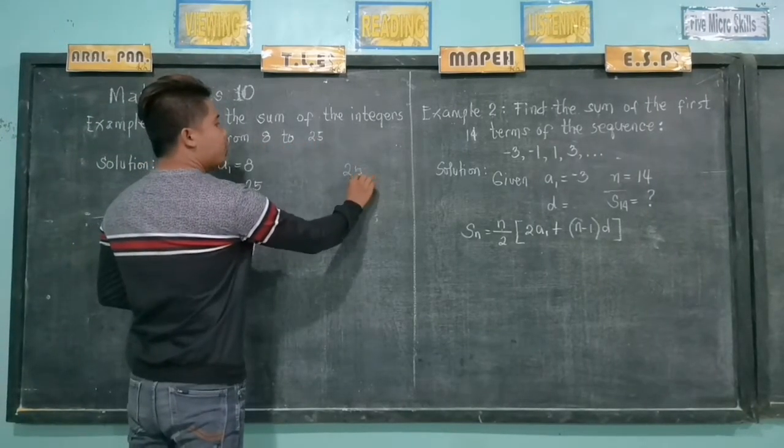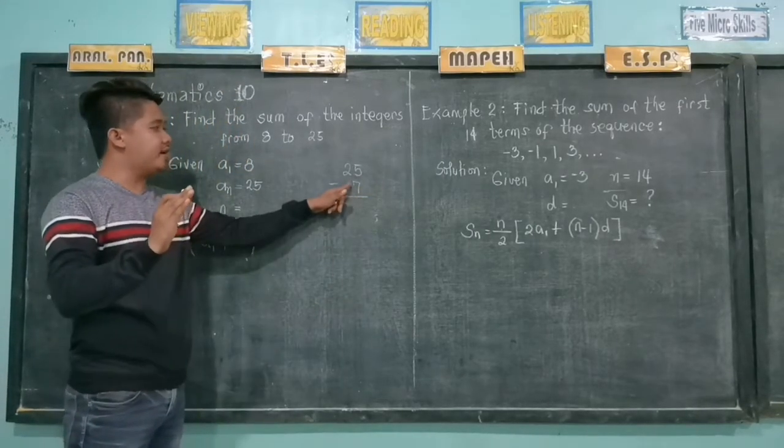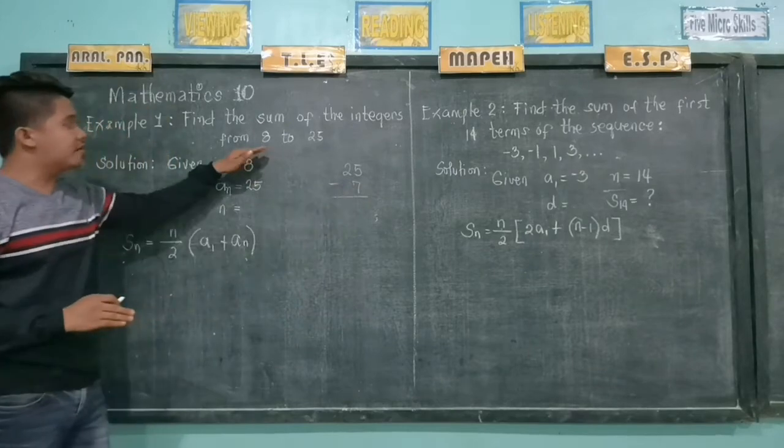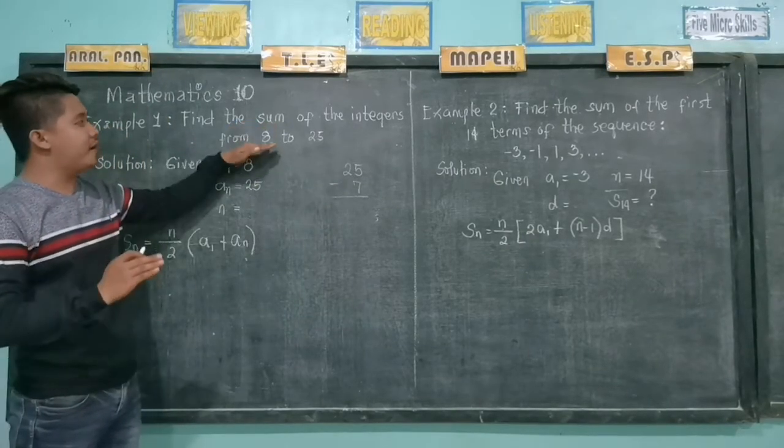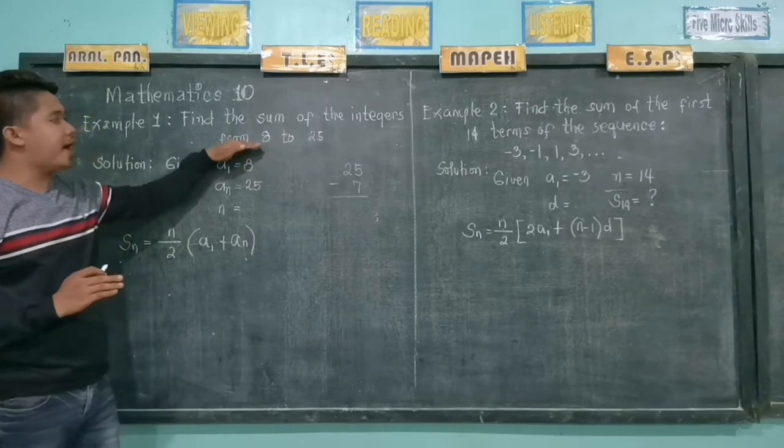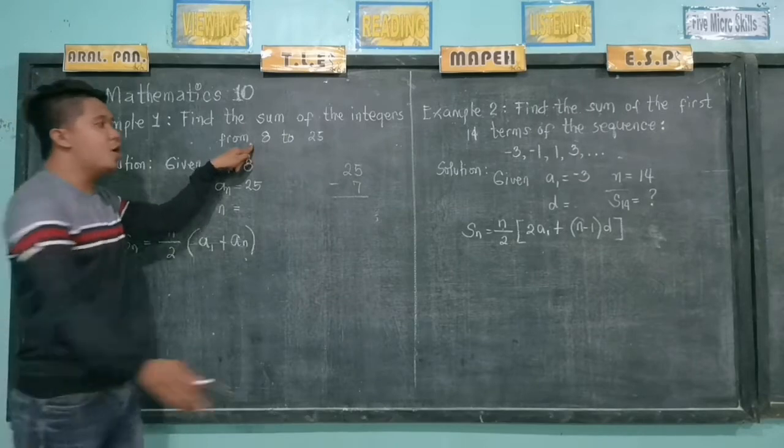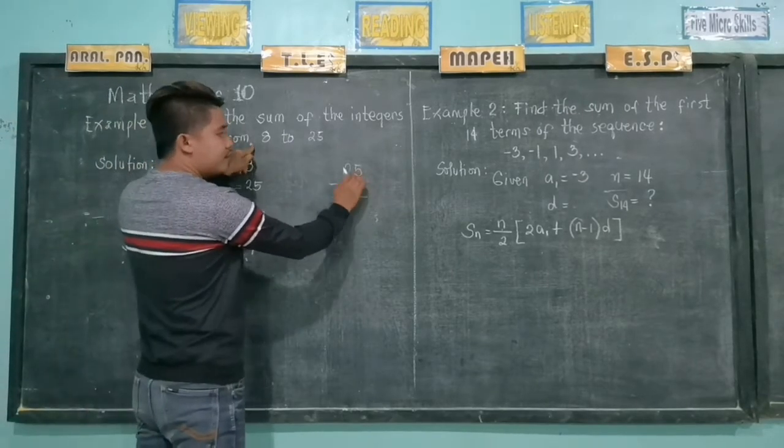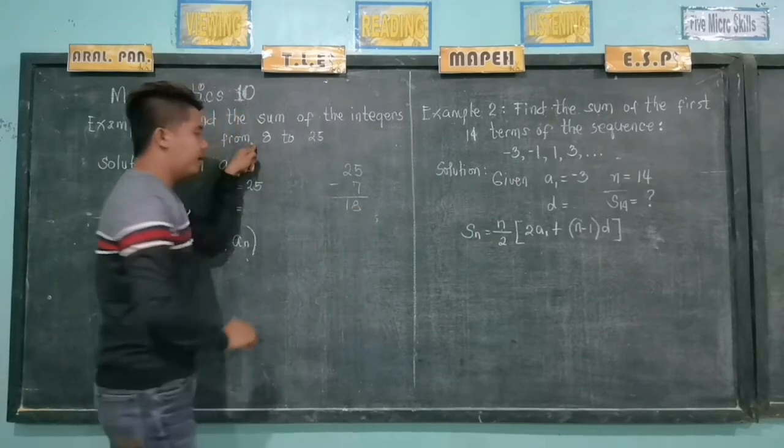Or simply, you can have 25 minus 7. Why 7? Because you can observe we are just asked to find the sum of the integers from 8 to 25. 1 to 7 is not included. So therefore, we will subtract 7 from 25. So we have 18.